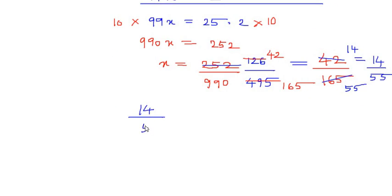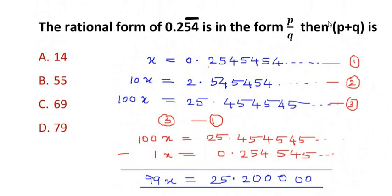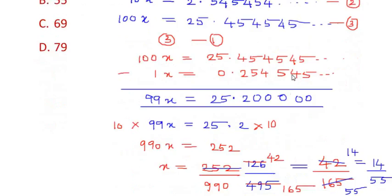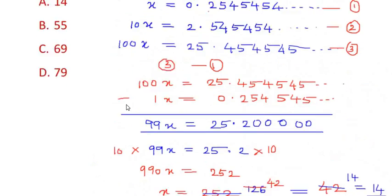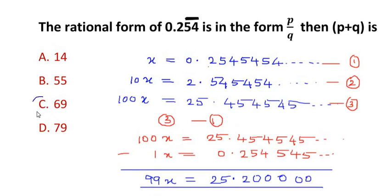So now 14 over 55 has been in the form of p over q. They want us to find out the addition of p plus q, so p plus q is nothing but 14 plus 55. By adding this we get it as 69, so the answer for this question is 69, which is option C.